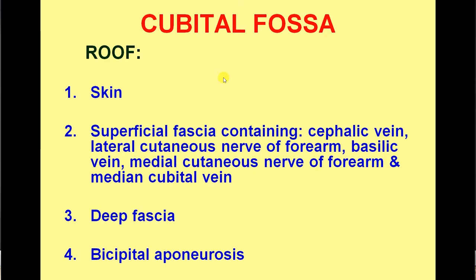We have the relations — that is roof, floor, and boundaries of the cubital fossa. Coming to the roof: first you will see the skin, then the superficial fascia. In the superficial fascia you find the cephalic vein laterally, basilic vein medially, and the median cubital vein, which is used for intravenous injections.